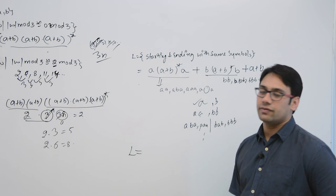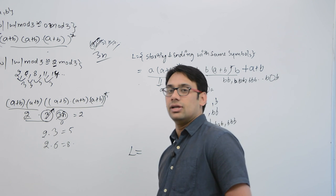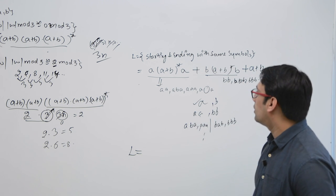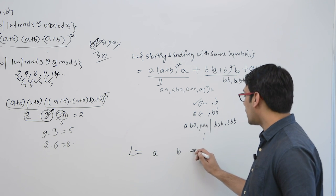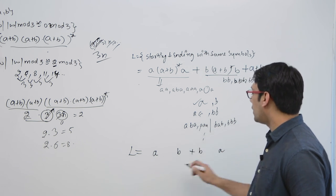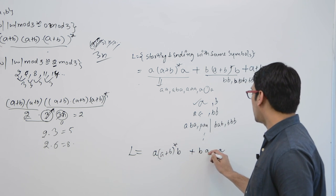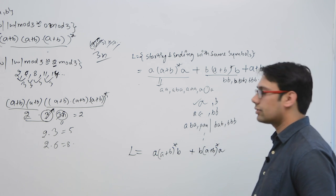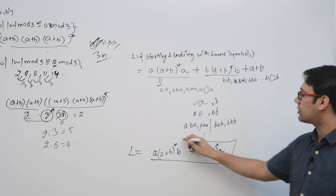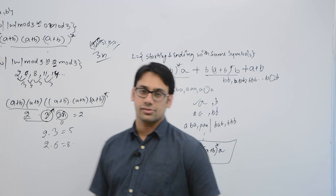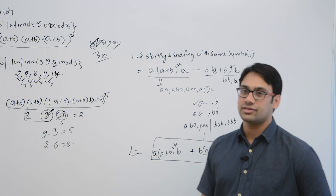Now if the language is strings starting and ending with different symbols: if starting with 'a' then ending should be 'b', and if starting with 'b' then ending should be 'a', with any combination of (a+b) in the middle. So the regular expression is a(a+b)*b + b(a+b)*a, representing strings that start and end with different symbols.